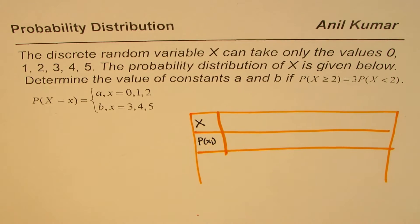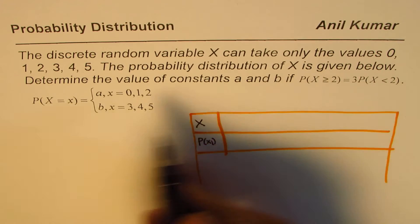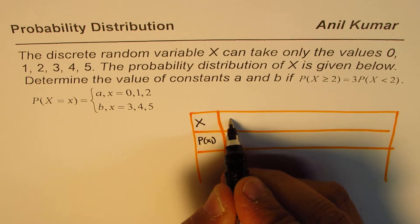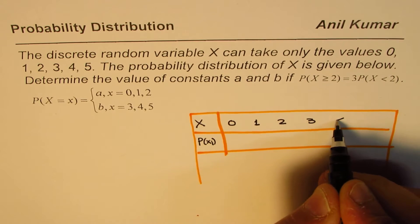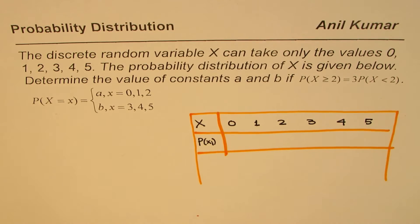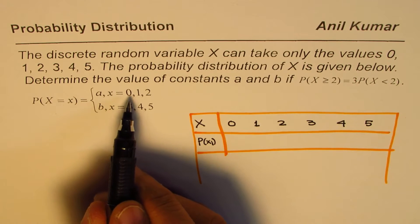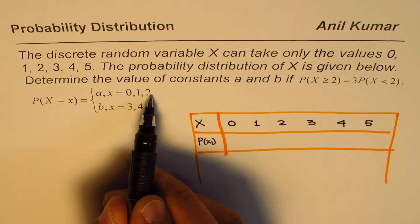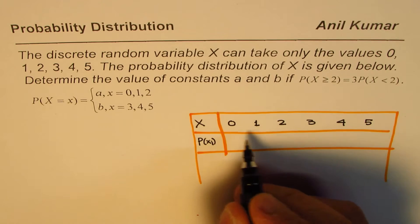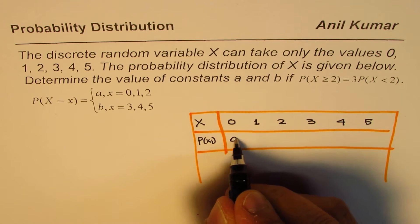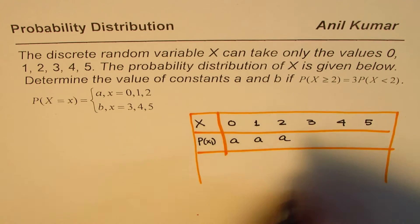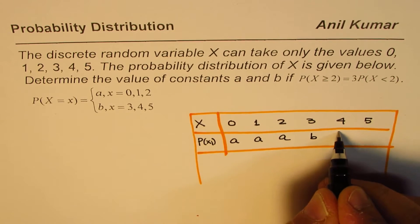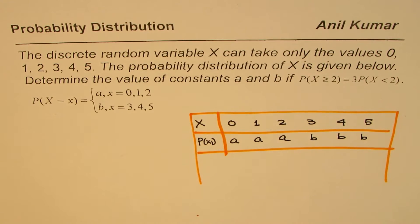The value of x could be 0, 1, 2, 3, 4, or 5. Now it says here that if the value of x is 0, 1, or 2, the probability is A — so for the first three values, the probability is A. And if x is 3, 4, or 5, the probability is B — so for those three values, the probability is B.